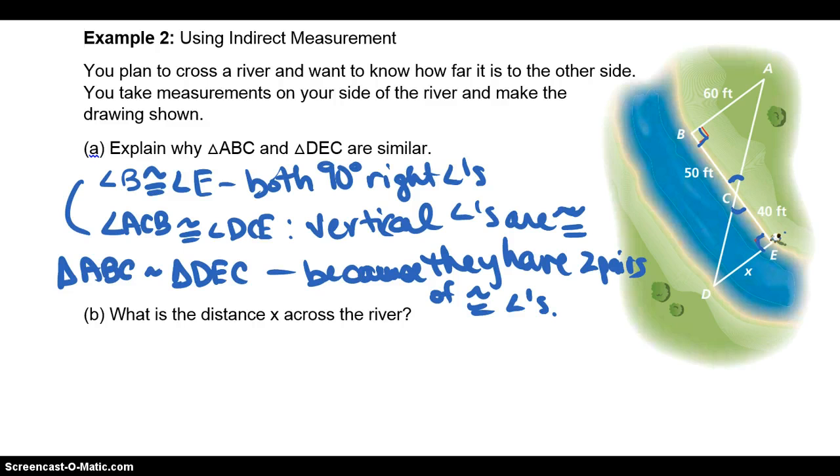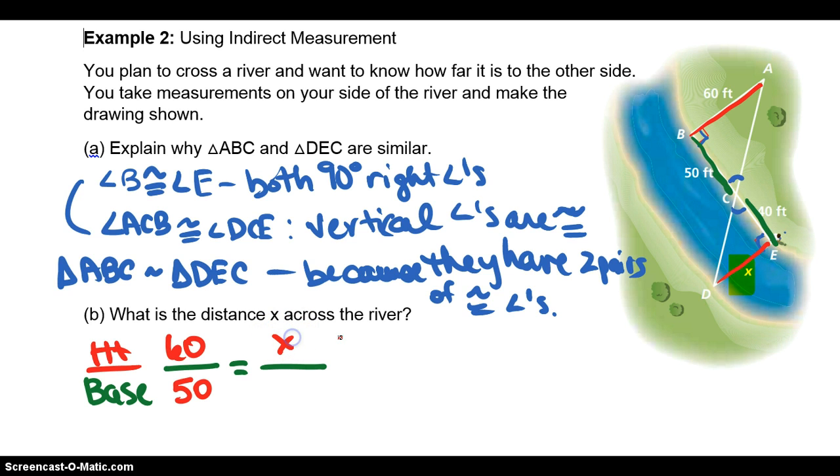What is the distance X across the river? We're trying to find this distance X right here across the river. We would know that these are proportional then. In similar triangles, the angle measurements are congruent, the sides are proportional. We could set up a proportion. I'm going to call this the height of the triangle, coming up from the right angle. I'm going to compare the height over the base. I need to have three of the four that I know. The height of this one is 60 over the base, which is 50. The height of the smaller triangle is X over the base, which is 40.